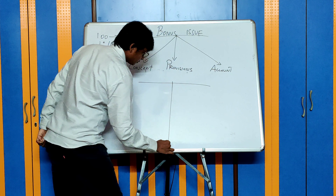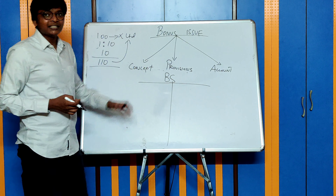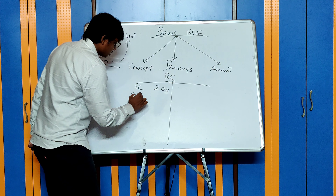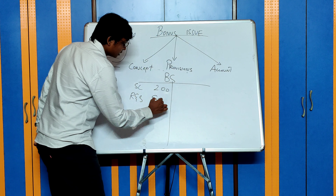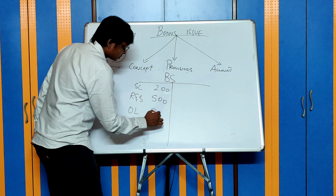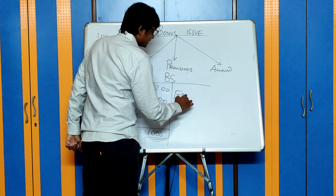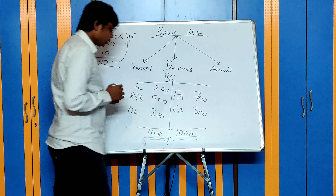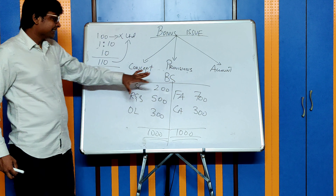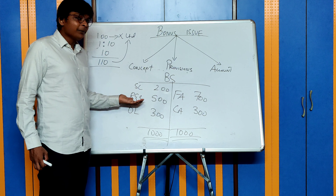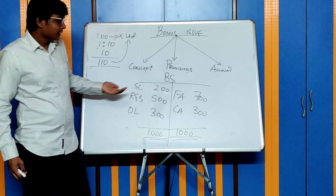Bonus issue means issue of free additional shares to existing shareholders. Let's take a company X Limited. Let's say you have 100 shares in this company. Now if they are going to issue bonus shares in the ratio of 1 for every 10 shares, you will receive 10 free shares, which will make you a shareholder of a total of 110 shares of the company. Will the company receive anything? No, the company will not receive any cash inflows.